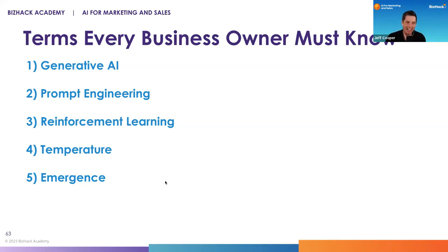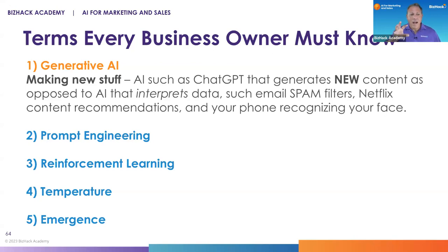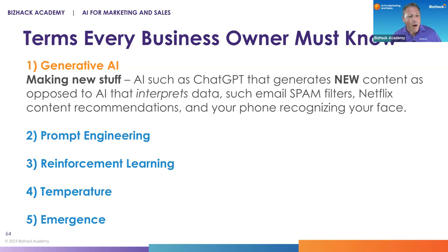So these are the terms every business owner must know. Generative AI: it's a very specific type of artificial intelligence that helps you make new stuff. We've had AI for a long time — like email spam filters or your phone recognizing your face. Generative AI is a new class of tools like DALL-E or ChatGPT that produces new content as opposed to just understanding content. One of the benefits of generative AI is that the content it creates is yours.